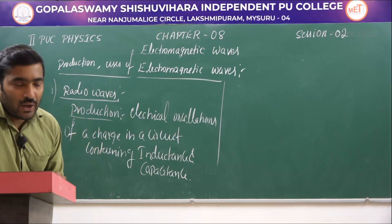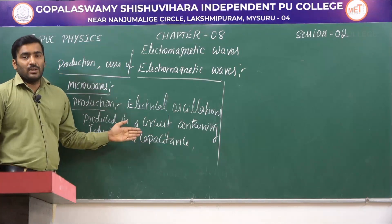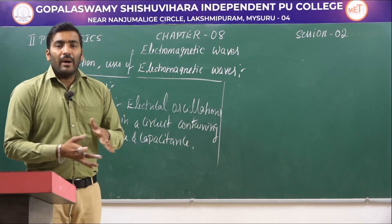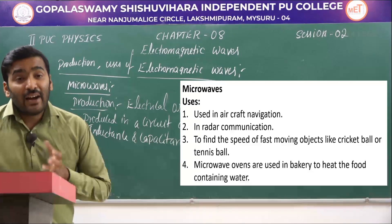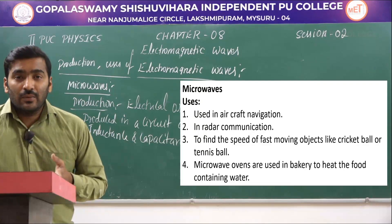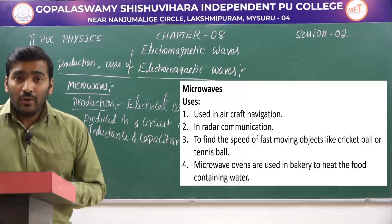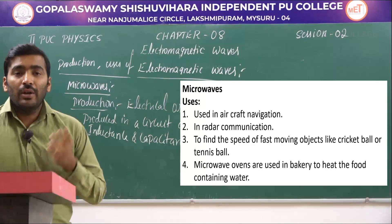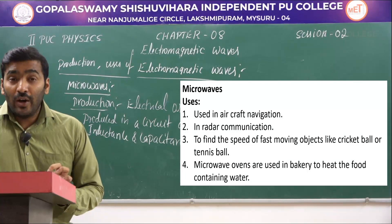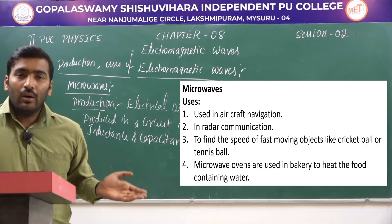Microwaves are also produced by electrical oscillations in a circuit containing inductance and capacitance (LC oscillations). The uses of microwaves include: aircraft navigation, radar communication systems used to find the speed of vehicles or fast-moving cricket and tennis balls, and microwave ovens used to heat food containing water.